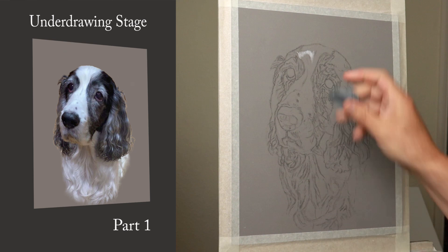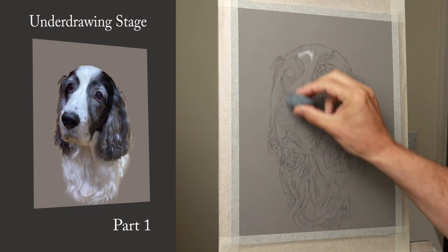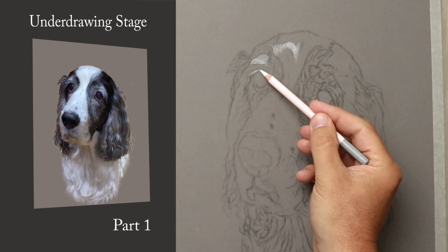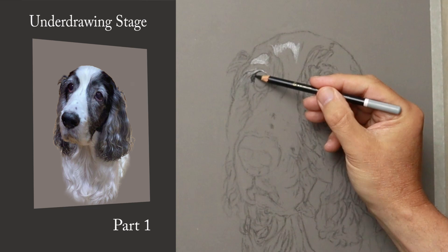Just ghosting the outline now with the Faber-Castell Needleball Eraser, keeping everything nice and loose, using the Carbothello white — putting more pressure on where it's lighter, less where it's mid-tone, and then just using the black to get an idea.